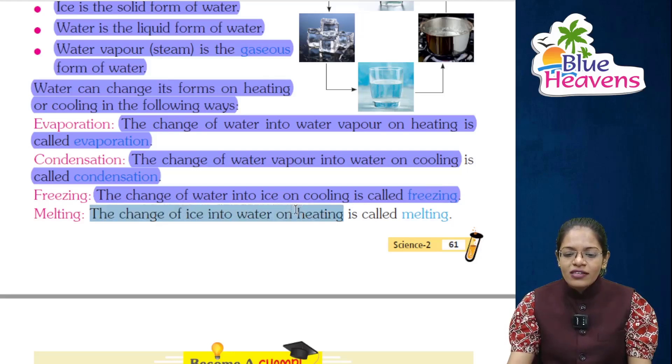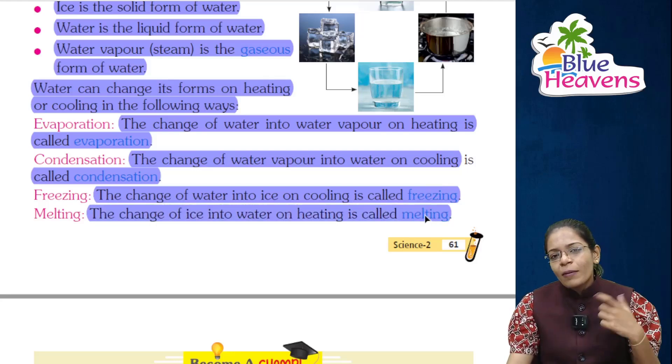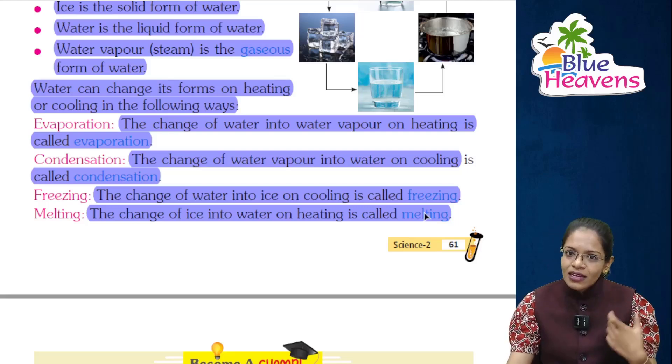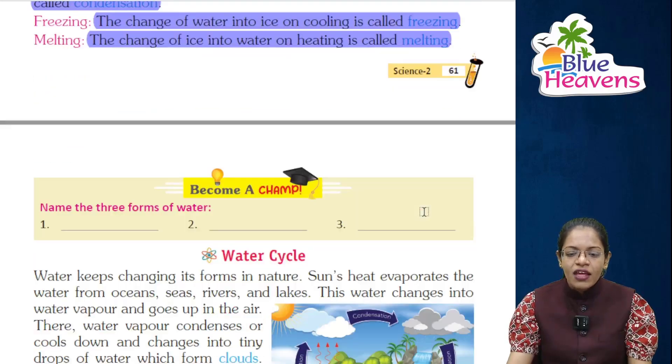The change of ice into water on heating is called melting. When you heat ice, it melts and comes back to liquid form — solid to liquid. This is called melting.